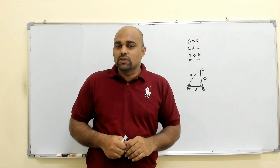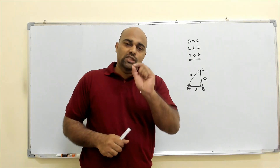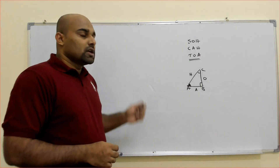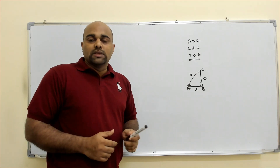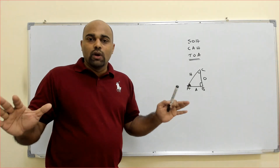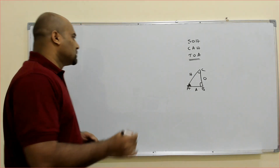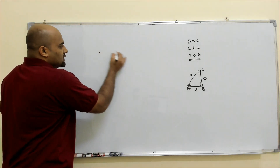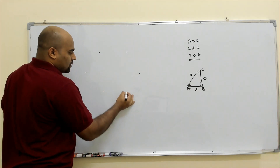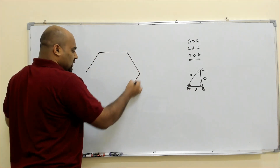We have six trigonometric ratios: sin, cos, tan, cosec, sec, and cot. I am just going to draw one hexagon. We are calling it a super hexagon or magic hexagon. In this hexagon, whatever result you learn in grade 10 completely — you can see. I am just writing a hexagon. Why hexagon? Because we have six trigonometric ratios.